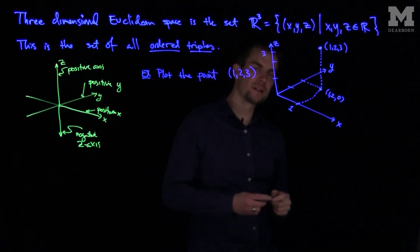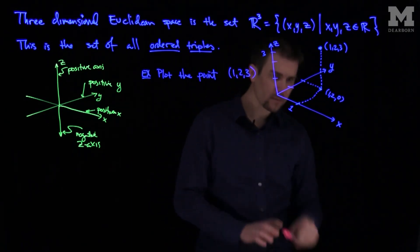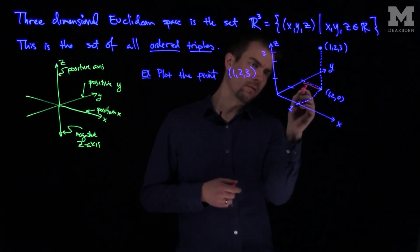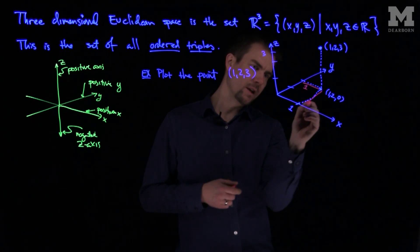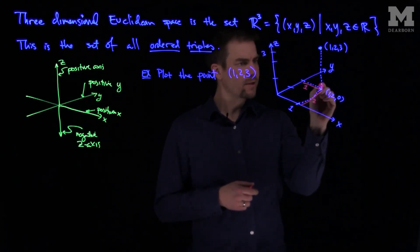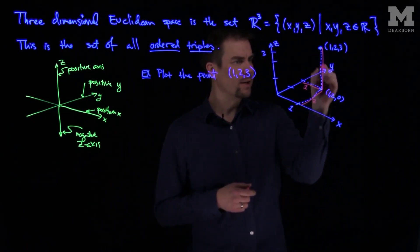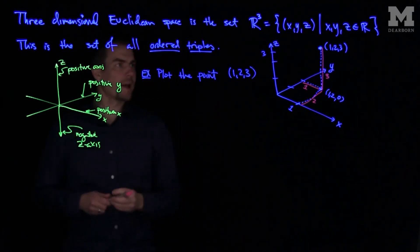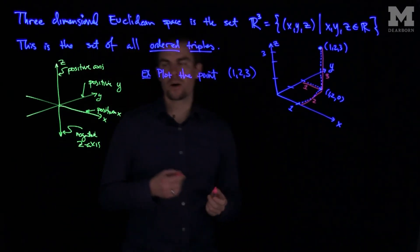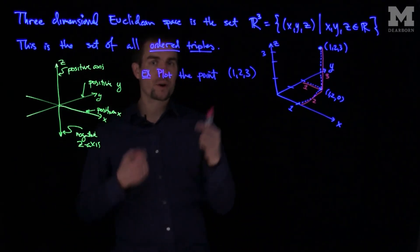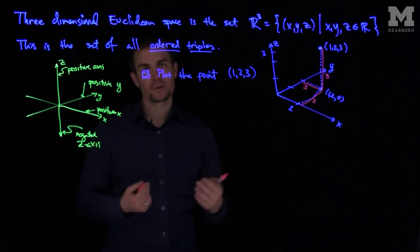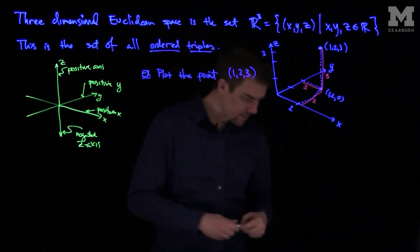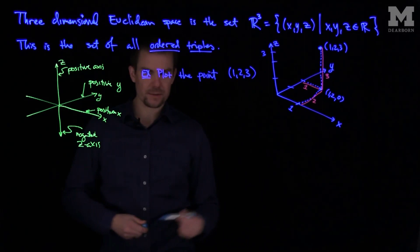We can notice that these things have corresponding lengths. This length over here is a length of one, this length is a length of two, and this length is a length of three. That's how we plot points in Euclidean space. Now if we have points where there are negative components, it becomes more difficult to plot points because you have to look at different perspectives.